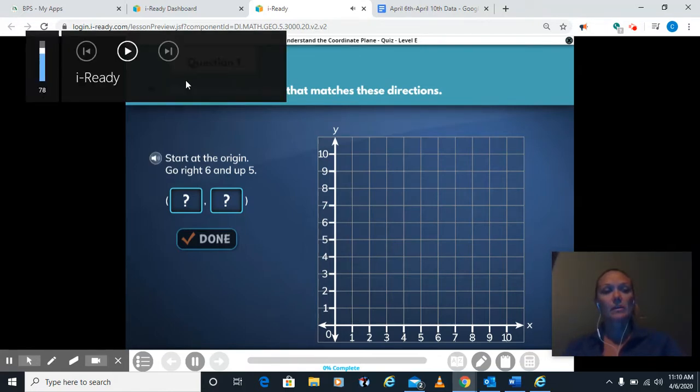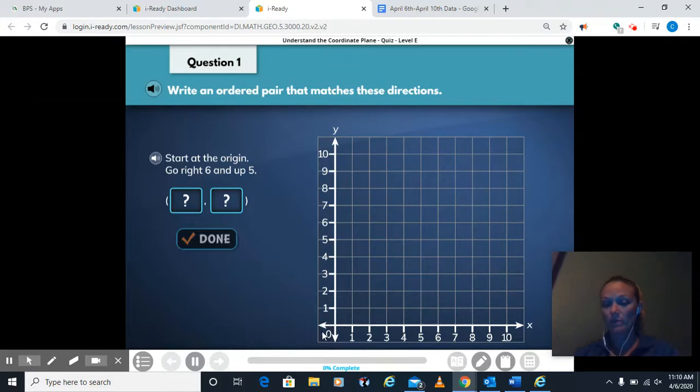I don't know if you guys could hear that question. It said to write an ordered pair that matches these directions. It says start at the origin, the origin being 0, 0 right here. Go right, 6.